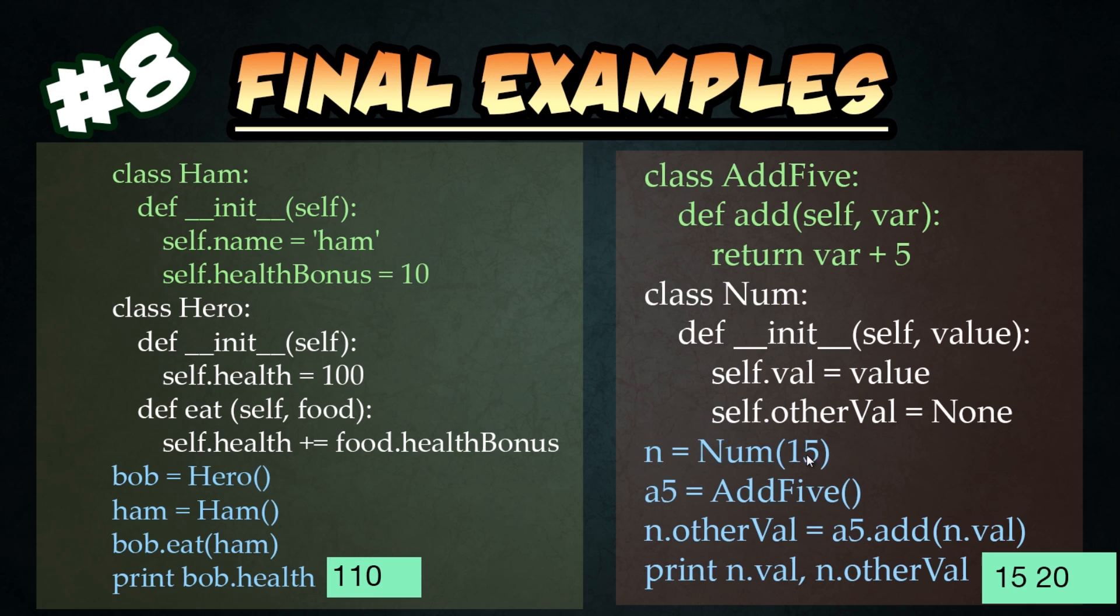Then on the right hand side, we have a simple class and function created to just add five to whatever we're passing in there. And then we have another class to store values of whatever is being passed in the constructor of the class, the instance when it's created, and then another variable to store what the new value is going to be down the road. Here we create it with a value of 15. Then we create an instance of the class add five. And then we actually call the function add and add five to whatever the current value is. It'll create a 20 and then that's being fed into its variable other val. And so then we just output the values being stored.